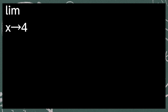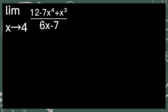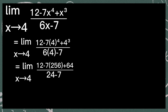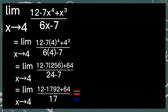Next, the limit of 12 minus 7x raised to the 4th power plus x cubed, over 6x minus 7, as x approaches 4. Substitute 4 to all of the x's. So we have 12 minus 7 times 4 raised to the 4th power plus 4 cubed, over 6 times 4 minus 7. 4 raised to the 4th power is equal to 256, and 4 cubed is equal to 64. So 7 times 256 is equal to 1792. So 12 minus 1792 plus 64 is equal to negative 1716 over 17, or negative 100.94.